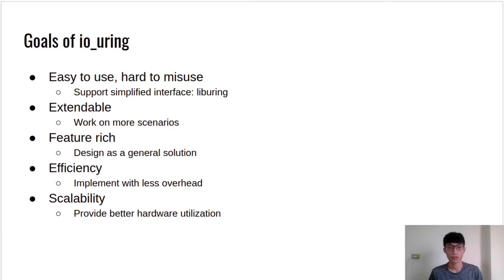The second goal is extendability. In previous I/O interfaces, usage is limited — operations on a buffered file or socket will fall back to synchronous or blocking. io_uring tries to be useful not only for blocking-oriented I/O but also for networking and non-blocking storage. The third goal is feature-rich: io_uring is not designed for only specific applications, preventing reinventing the same functionality repeatedly. The fourth and fifth goals are efficiency and scalability. Both are common goals when designing a new interface. We will explain later why io_uring can be said to be an efficient and scalable interface.